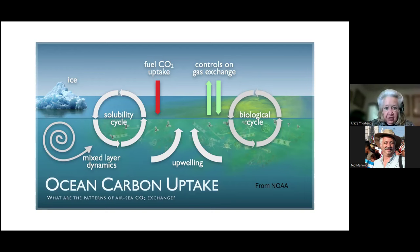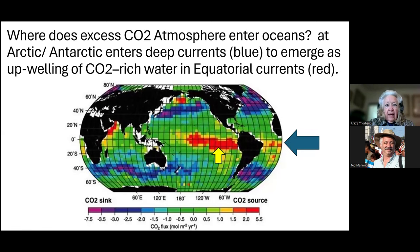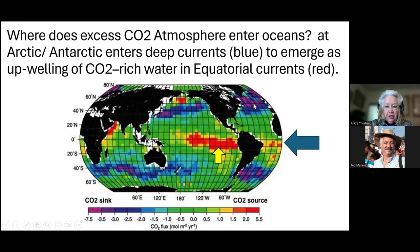Basically, 30 to 68 percent — and this is very disputed — of the carbon dioxide goes into the ocean. The excess goes into what you see here as blue areas: the Antarctic and the Arctic area. That's where it enters the ocean, particularly as carbon dioxide-rich water.